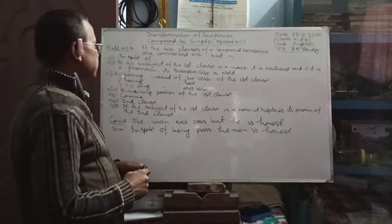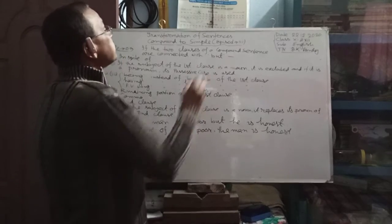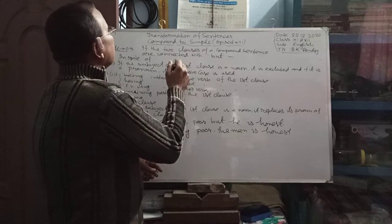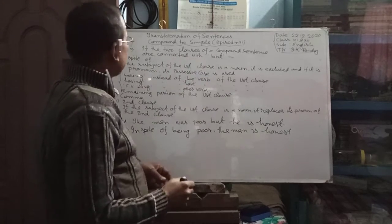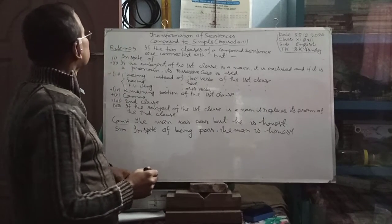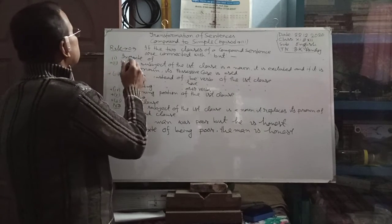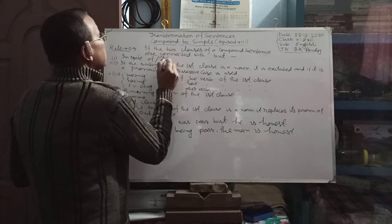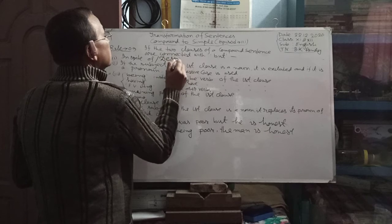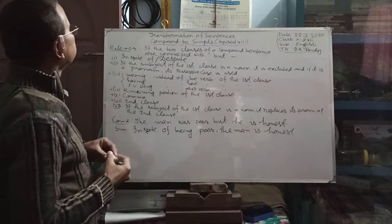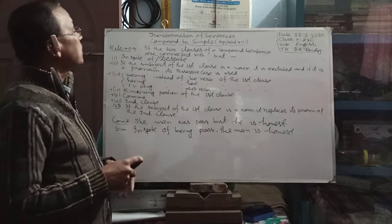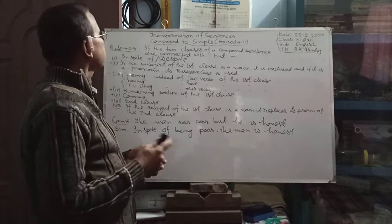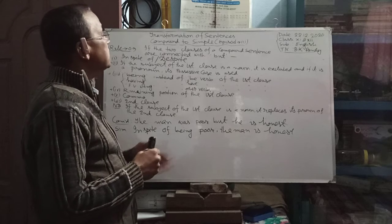Rule number 9. If the two clauses of a compound sentence are connected with 'but', then we have to follow these rules for the first clause. First, use 'in spite of' — or we can also use 'despite'. Then, if the subject of the first clause is a noun, it is excluded. And if the subject is a pronoun, we have to use its possessive case.